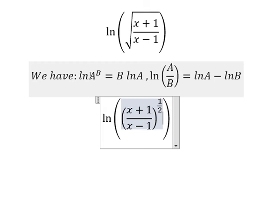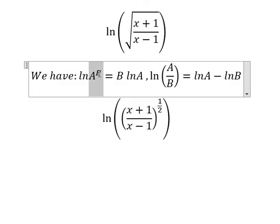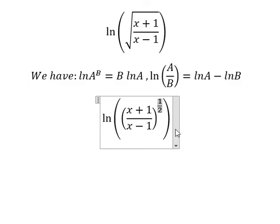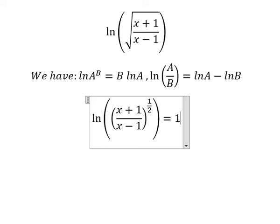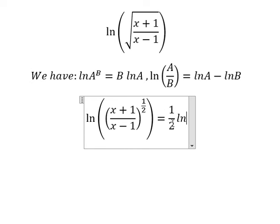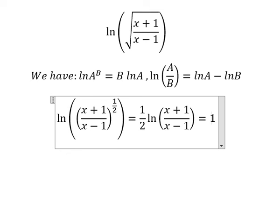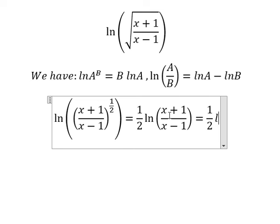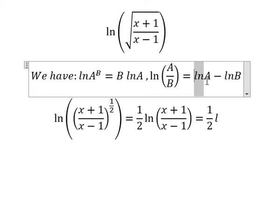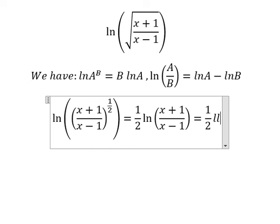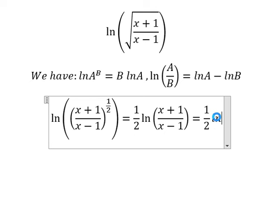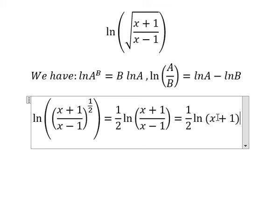Now capital A is this one, capital B is this one. So we have 1 over 2 multiplied by ln of this expression. We need to transform this into ln A minus ln B because we have 1 over 2 here, so 1 over 2 multiplied by ln A and ln B.